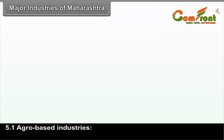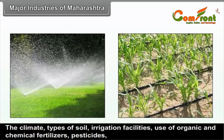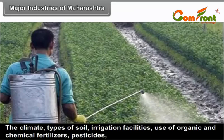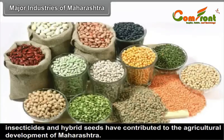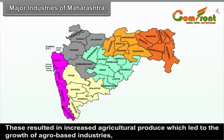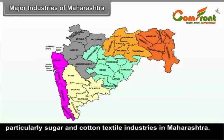Major Industries of Maharashtra — 5.1 Agro-based Industries. The climate, types of soil, irrigation facilities, use of organic and chemical fertilizers, pesticides, insecticides and hybrid seeds have contributed to the agricultural development of Maharashtra. These resulted in increased agricultural produce, which led to the growth of agro-based industries, particularly sugar and cotton textile industries in Maharashtra.